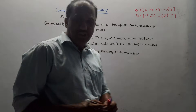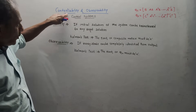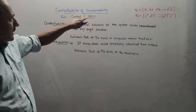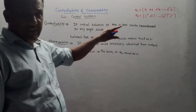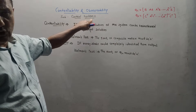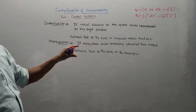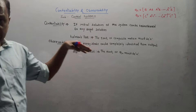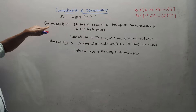Hello and welcome back to this channel. Dear students, this topic is controllability and observability. It is the last topic of the chapter on state space variables, and it is from the subject control systems. From the exam point of view, you can expect the definitions of these terms, but numericals are more important. Let us first discuss this concept.